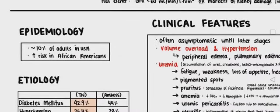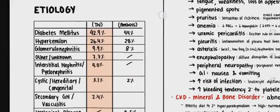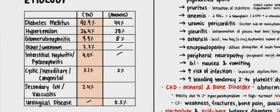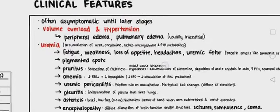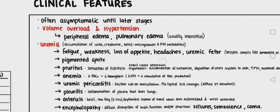The epidemiology of CKD: it affects about 10 percent of adults in the USA, with increased risk in African Americans. The causes of CKD include diabetes mellitus, hypertension, glomerular nephritis, interstitial nephritis, congenital diseases, vasculitis, and urological diseases.